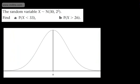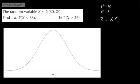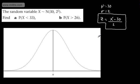The first example: the random variable x follows a normal distribution with mean 30 and variance 2 squared. Since the variance is 4, the standard deviation is 2. So mu equals 30 and sigma equals 2. The conversion formula becomes z equals x minus 30, divided by 2. We'll apply this to the two parts using our standard normal table.